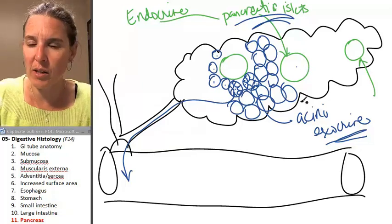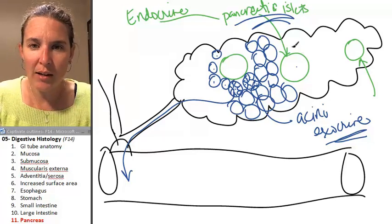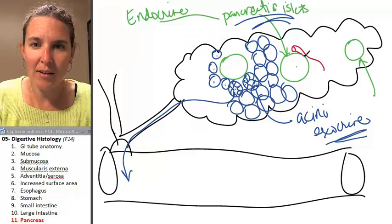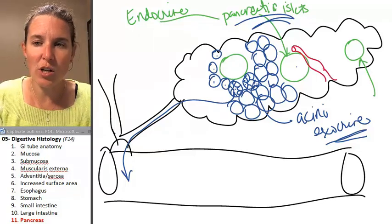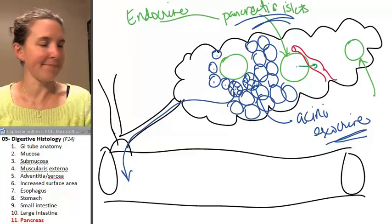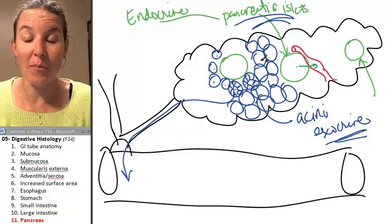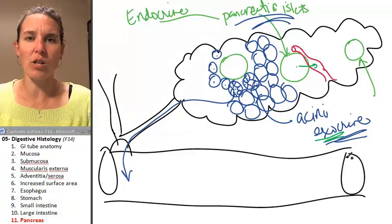So you also are going to have to have blood. Got to have blood. Here's a little blood supply. Do my exocrine structures dump fluid into the blood? No, they dump it outside your body to the lumen of the duodenum because it's exocrine. That's the definition of an exocrine structure.